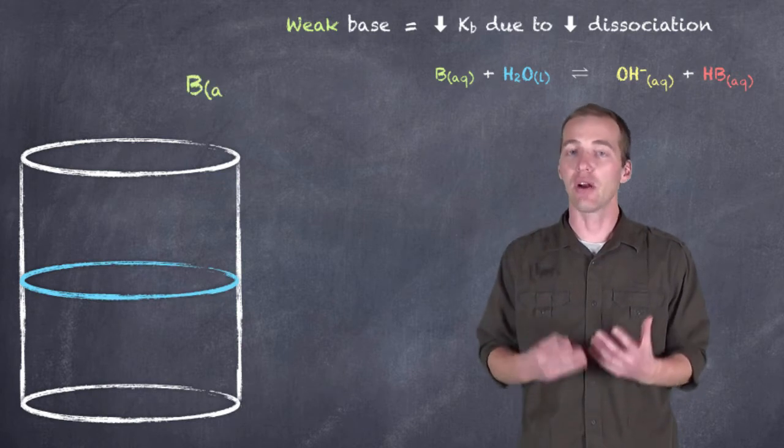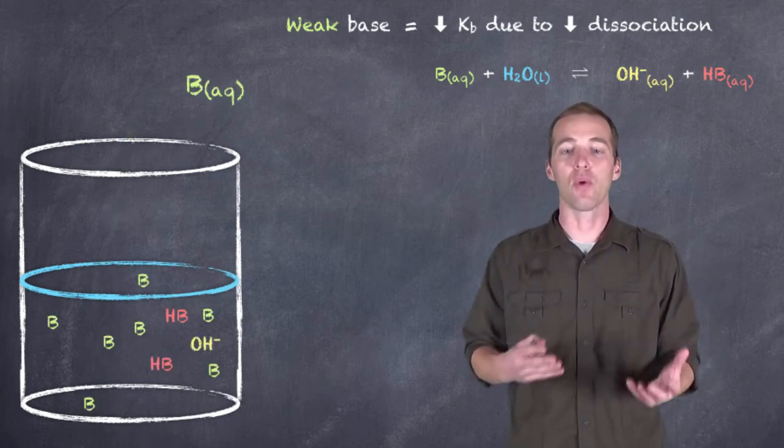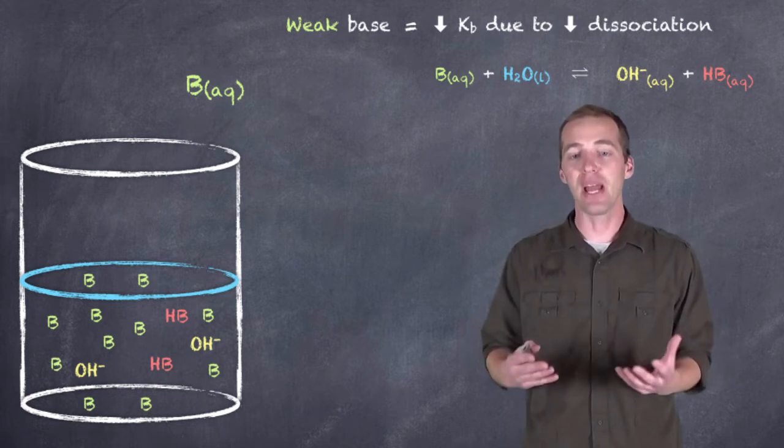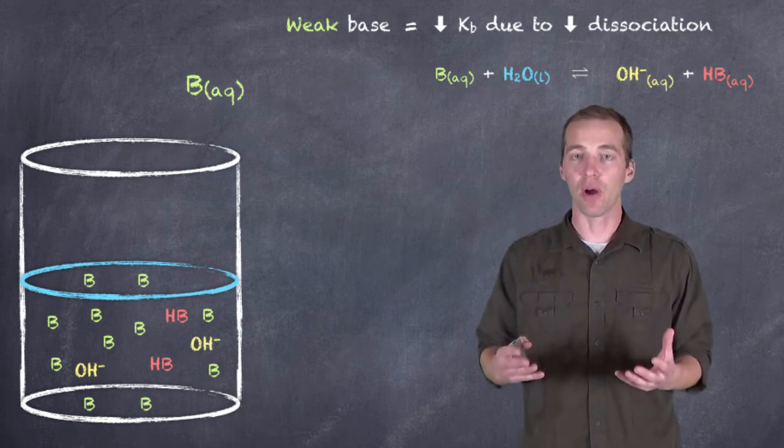So this is where our equilibrium comes in, because very few of these molecules are actually going to dissociate into hydroxide ions. And if we take a look at another scenario in which we were to add base, and it would become solvated by water, what we would see is that a lot of that base would remain, and we would have very few hydroxide ions forming from there.